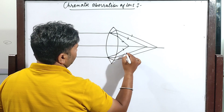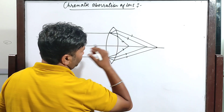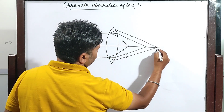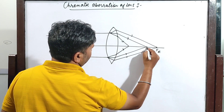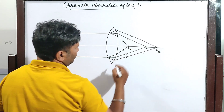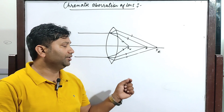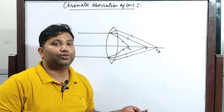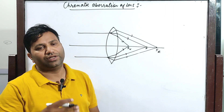The focal length for red color and violet color are different. The violet color has maximum deviation and the red color has minimum deviation. This is because the violet color has the maximum refractive index.